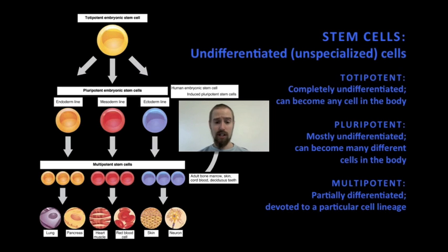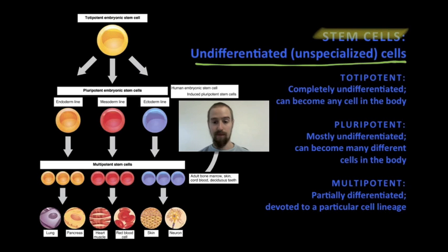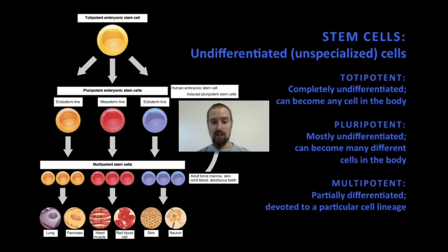We call undifferentiated, unspecialized cells stem cells. These cells have the potential to become many different kinds of cells. As these cells divide and replicate themselves, they go through a process called differentiation, and it is through this process that cells are able to specialize and take on specific roles and functions in the body.